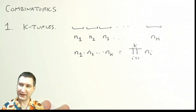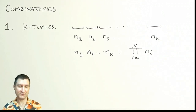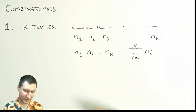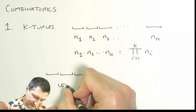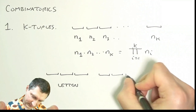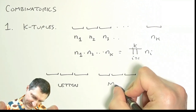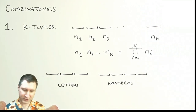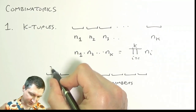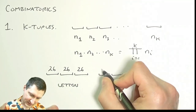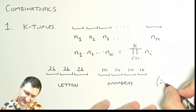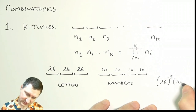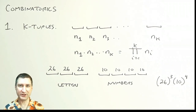One way to think about this is with product notation, where you multiply the number of possibilities for each slot altogether. For example, in New York State license plates have three letters and then four numbers. There are 26 possibilities for each letter slot and 10 possibilities for each number slot, so the total number of possibilities is 26 cubed times 10 to the fourth.